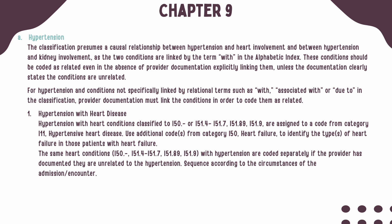All other conditions not specifically linked with relational terms such as with, associated with, or due to should be coded separately. When hypertension and heart disease are related, a minimum of two codes are needed: a code from Category I-11 for the hypertensive heart disease, as well as a code or codes from Category I-50 to specify the type or types of heart failure present. Sequencing of these codes is determined by the circumstances of the encounter or admission.